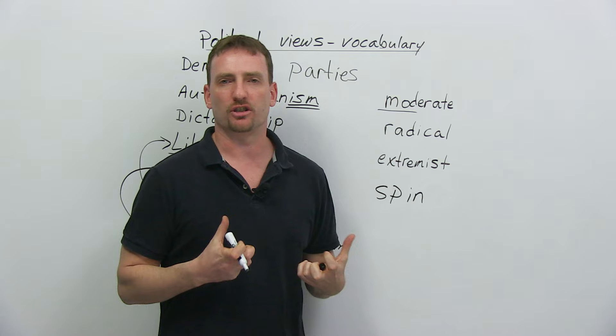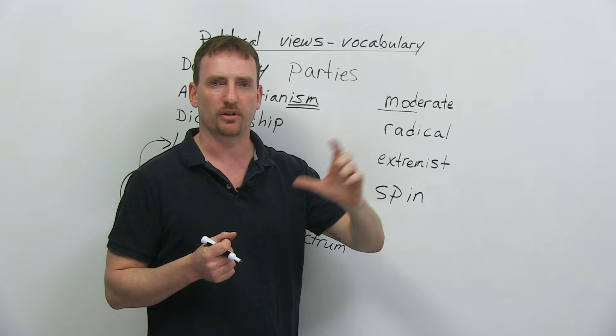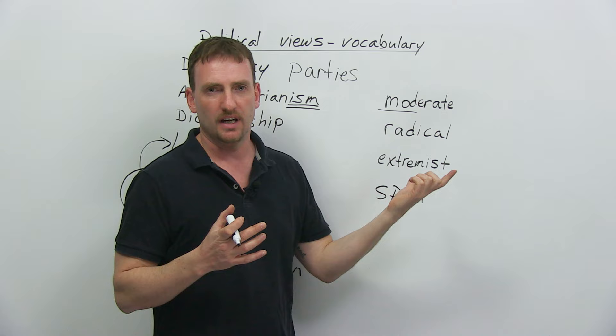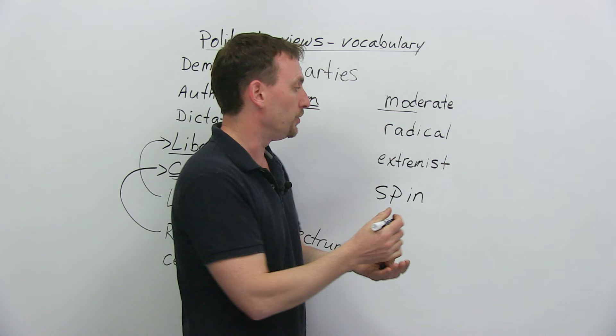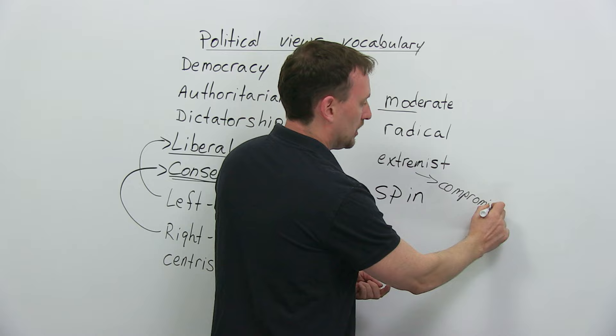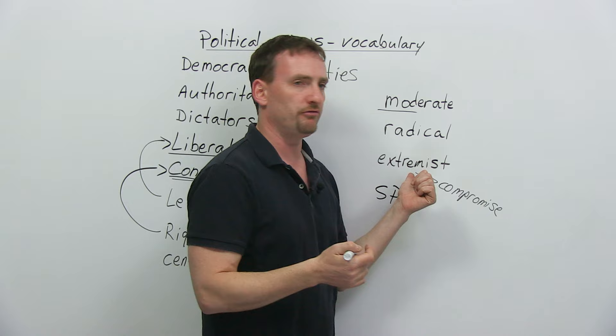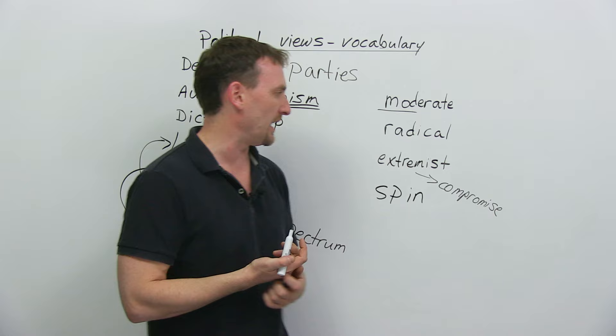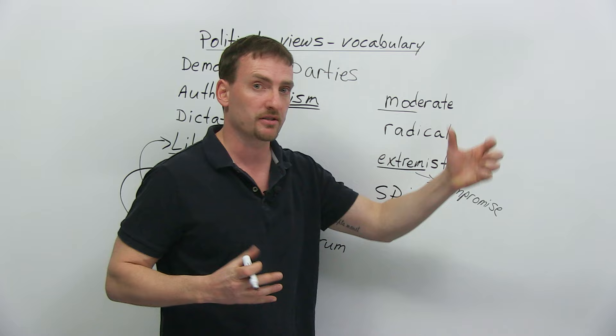Radicals want very major change. They want big changes, they want radical shifts, or they want what they want very strongly. Very similar to extremist. Extremist means there's only one way and that's it. Nothing else will do. They do not compromise. Compromise means I'll give a little bit, you give a little bit, and we'll meet somewhere in the middle. Extremists don't compromise. It's this way or no way. That's the idea of extremist. It comes from the word extreme. As much as possible, or as little as possible, depending on the case.